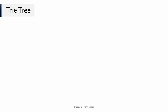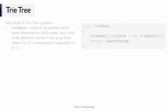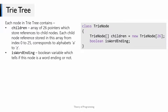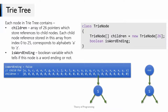Now let's come to the coding part. If you've coded any tree data structure before, you know the most important part is defining its node. A node definition usually contains pointers to its children and holds some information. Since a Trie tree can have up to 26 children — one for each alphabet from A to Z — the node definition has an array of 26 pointers called 'children'. We also mark some nodes as word endings using a boolean variable called 'isWordEnding'.